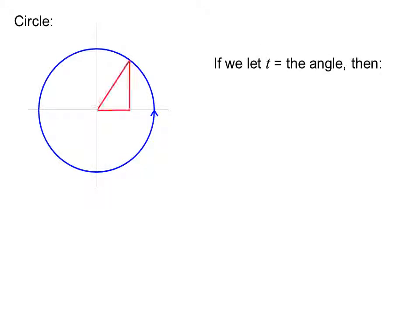We can graph a circle parametrically. Remember a circle is not a function. If we let t equal the angle, then we have this nice right triangle here and x equals cosine t.